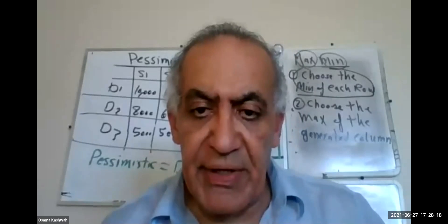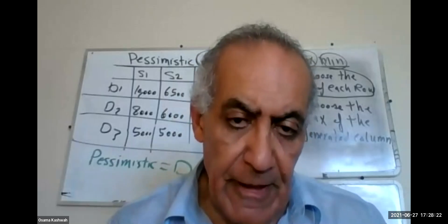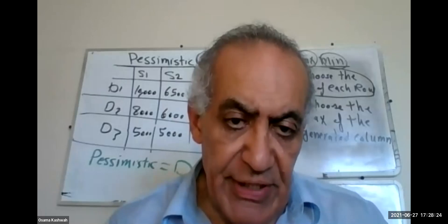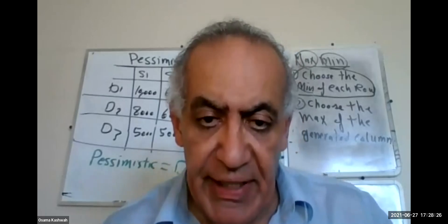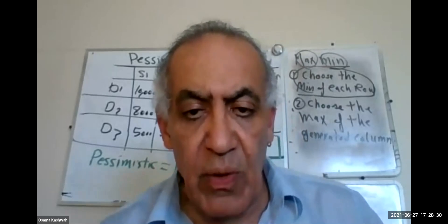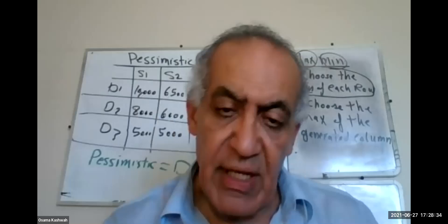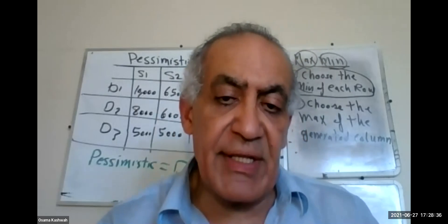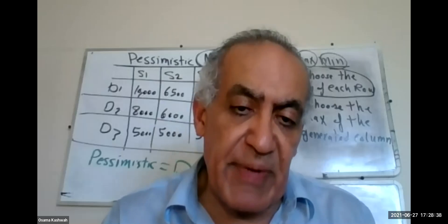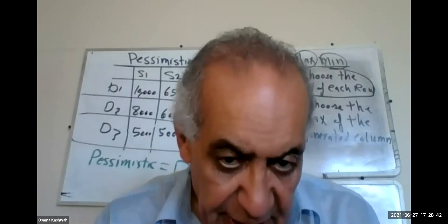Welcome my dear students back. We will talk now about the fourth criterion of the criterias which is used for decision making in the uncertainty situation, that is called the expected value. We will have two lectures about this. The first one is right now and the second one is using the expected value when we decide to draw the decision tree.